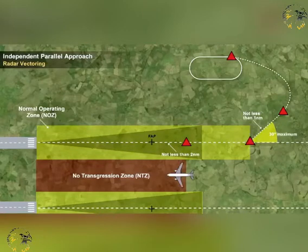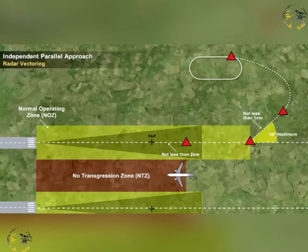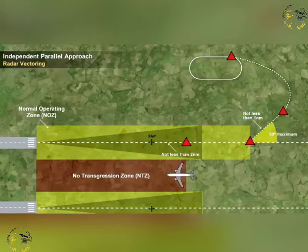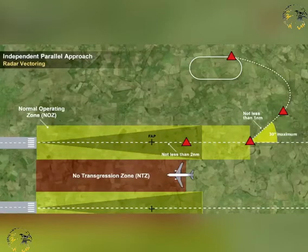If an aircraft overshoots the turn onto track and as a result will penetrate the NTZ, ATC will issue correcting instructions to the pilot. If the aircraft does penetrate the NTZ, then the adjacent aircraft will be given instructions to take up new headings and altitudes to avoid the deviating aircraft.